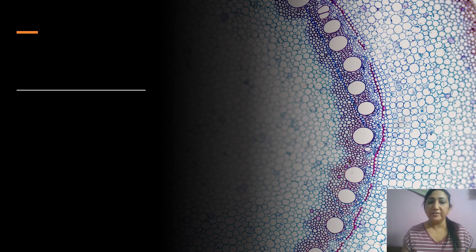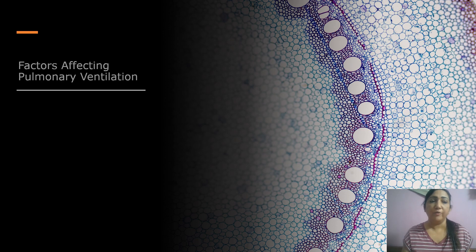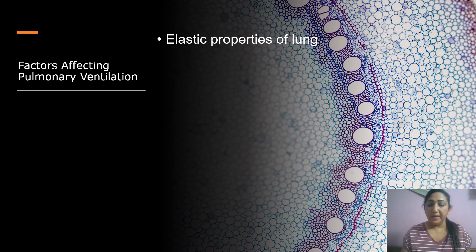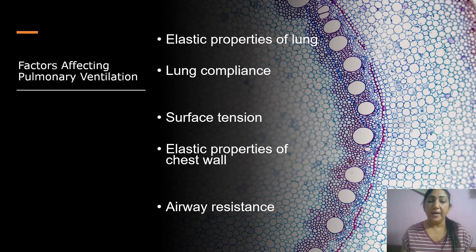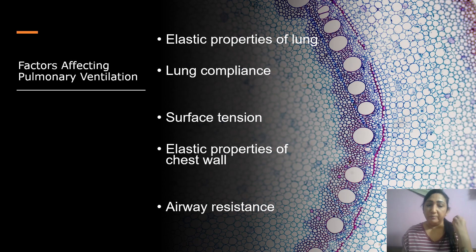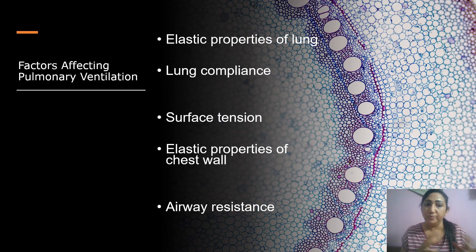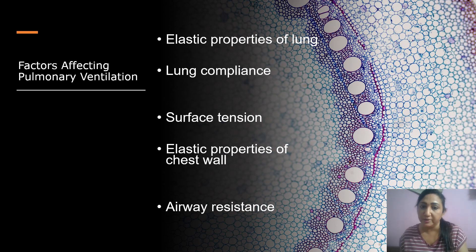We are going to know the various factors mainly responsible for pulmonary ventilation. The first factor is the elastic properties of the lung. Next is lung compliance, then surface tension, elastic properties of the chest wall alone, and airway resistance. These are the physical factors which help pulmonary ventilation, each or sometimes together. Surface tension is very important to maintain compliance and airway resistance.